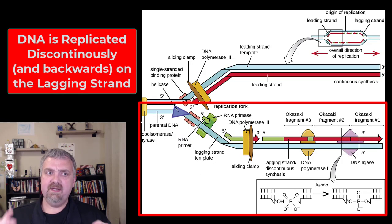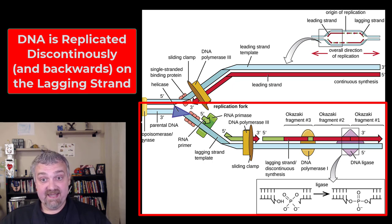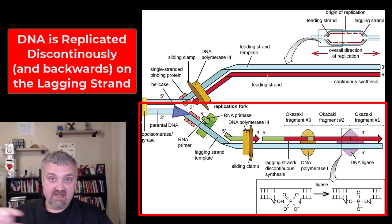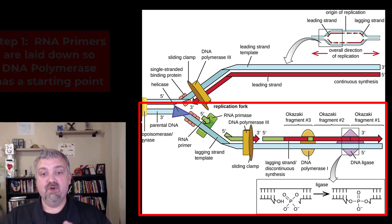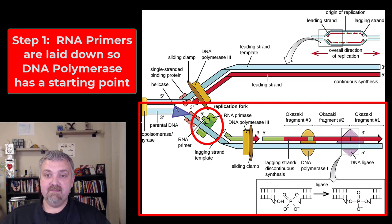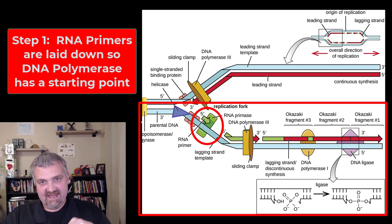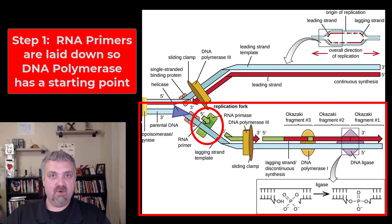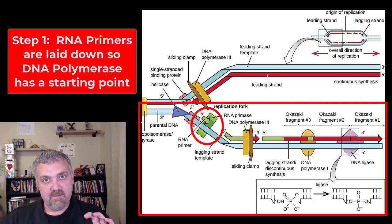The leading strand is very straightforward, but things are a lot more complicated with the lagging strand, because the DNA has to be copied backwards — it has to loop around and make copies of itself backwards. In order to do that, the first step is laying down RNA primers. DNA polymerase can make DNA but it needs a starting point, just like a zipper — it can be 100 miles long but it needs that little piece at the bottom to get started. So the lagging strand requires these little RNA primers as starting points for DNA polymerase.